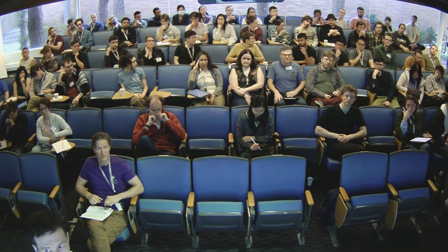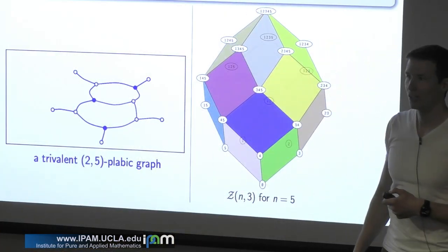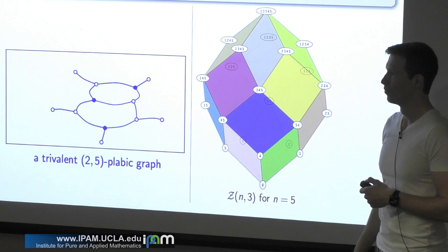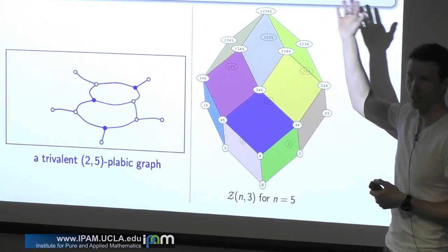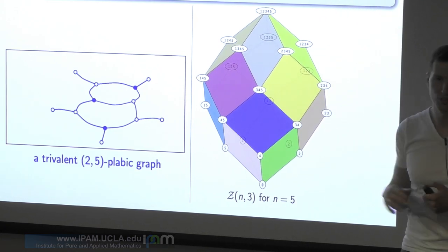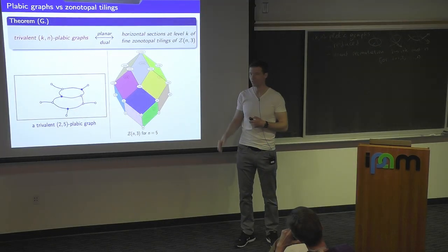Question: is the 3 in R^3 and the 3 in trivalent connected? No. And there isn't a four-dimensional variant that gives you something analogous — we tried to look for what happens for arbitrary zonotopes, and it's trickier.